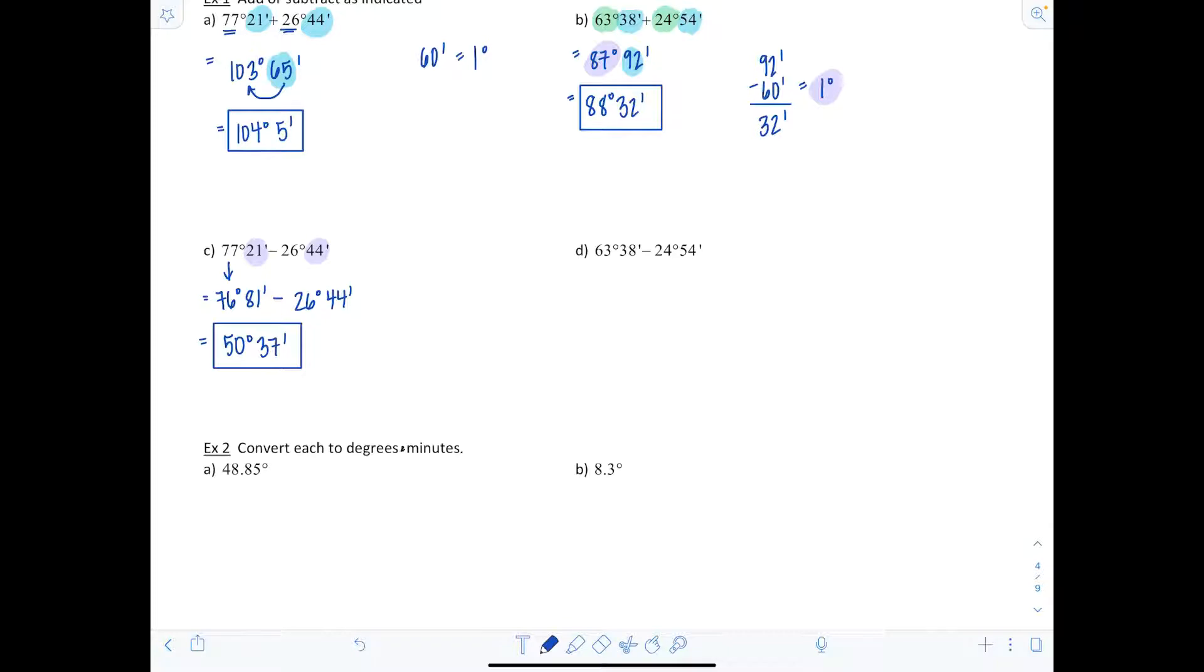Last one like this. We have 63 degrees 38 minutes minus 24 degrees and 54 minutes. Again, I need to borrow because I can't take 54 from 38. So 63 becomes 62 degrees. Adding 60, this is now 98 minutes minus 24 degrees and 54 minutes. 62 minus 24 gives us 38 degrees, and 98 minus 54 is 44 minutes.